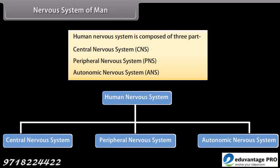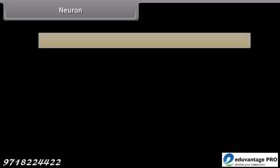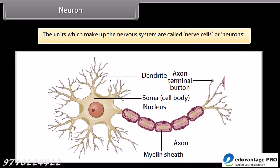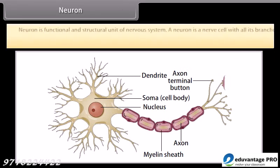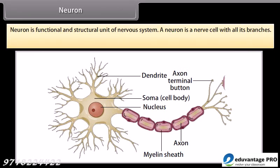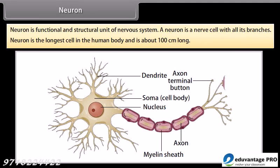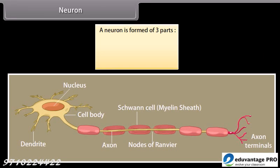The human nervous system is composed of three parts: central nervous system (CNS), peripheral nervous system (PNS), and autonomic nervous system (ANS). The units which make up the nervous system are called nerve cells or neurons. A neuron is the functional and structural unit of the nervous system — a nerve cell with all its branches. The neuron is the longest cell in the human body, about 100 cm long.